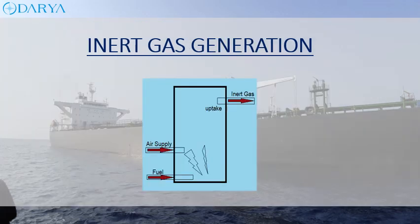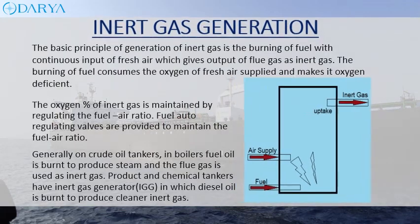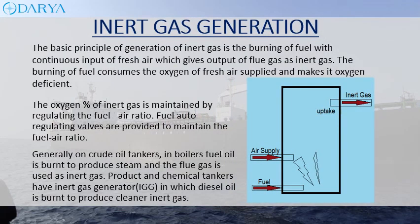The basic principle of generation of inert gas is the burning of fuel with a continuous input of fresh air, which gives output of flue gas as inert gas. The burning of fuel consumes the oxygen of fresh air supplied and makes it oxygen deficient. The oxygen percentage of inert gas is maintained by regulating the fuel-air ratio; fuel auto-regulating valves are provided to maintain the fuel-air ratio.